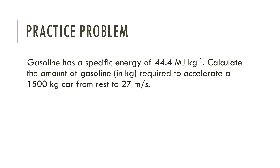One type of problem you'll encounter involves energy density or specific energy — really just factor-label method problems. Here's an IB example: gasoline has a specific energy of 44 million joules per kilogram. If you want to accelerate a car up to 27 meters per second, how much gasoline will you burn? Using conservation of energy plus the units of specific energy, try to work out how much energy you need, then use specific energy to find the mass of fuel required.